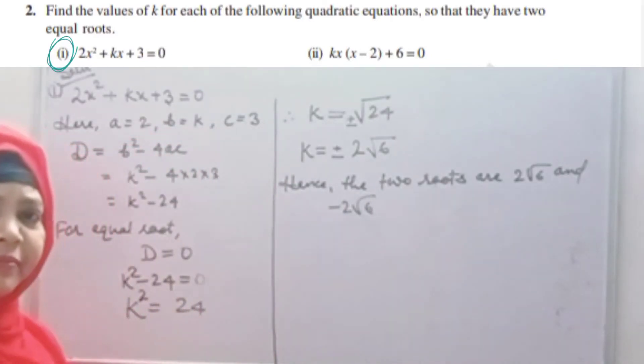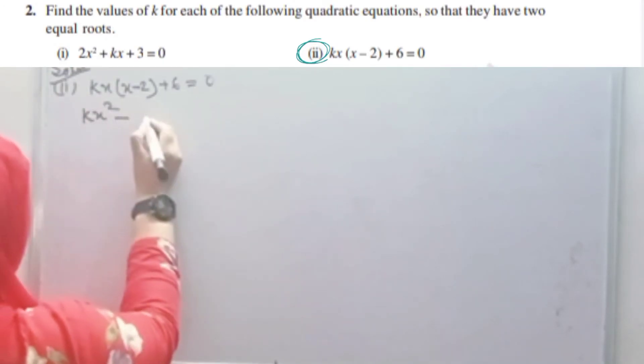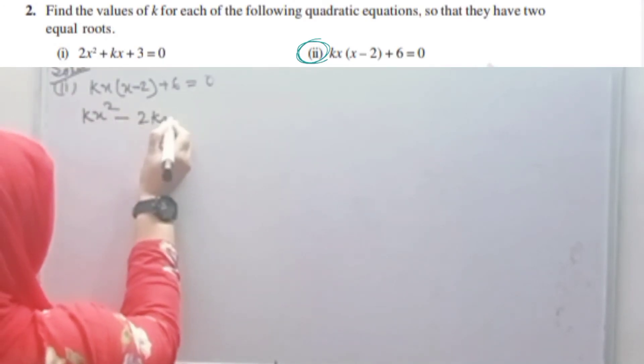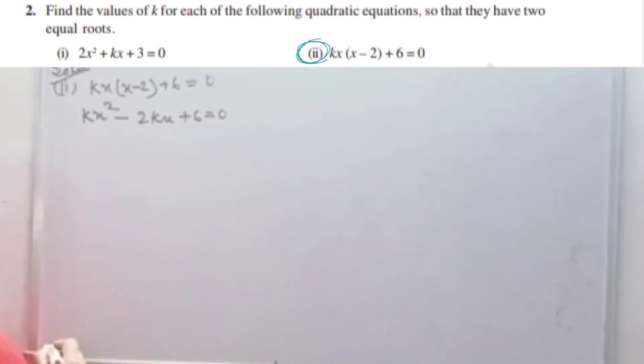Very simple, no problem. So let's see the second part. Second part, same way, simply we have to find the value of k. First we need to write the quadratic equation in standard form. So first, we multiply kx by (x-2). kx squared minus 2kx plus 6 equals to 0.